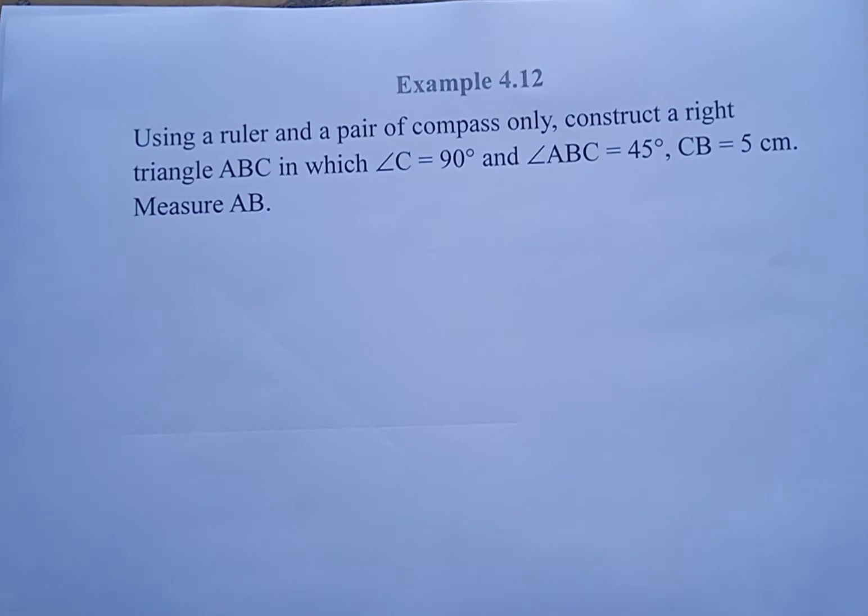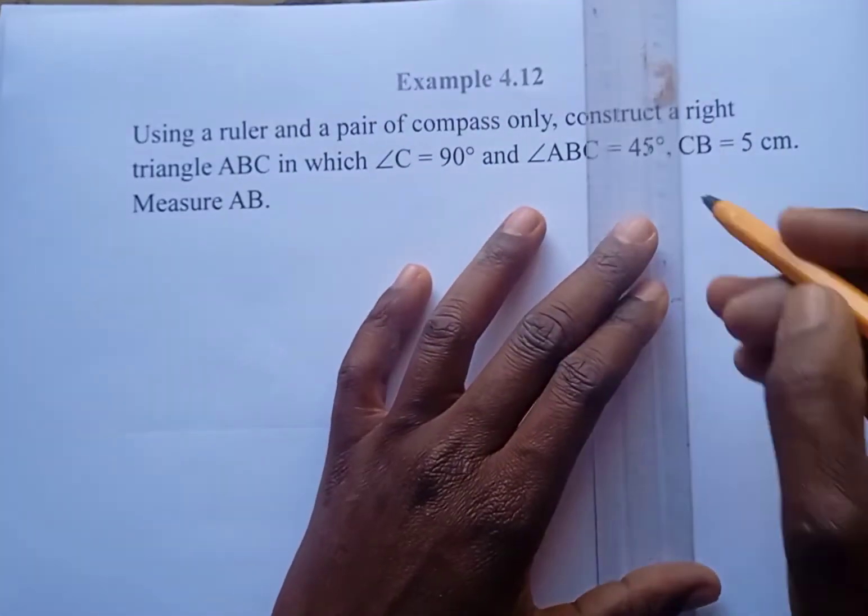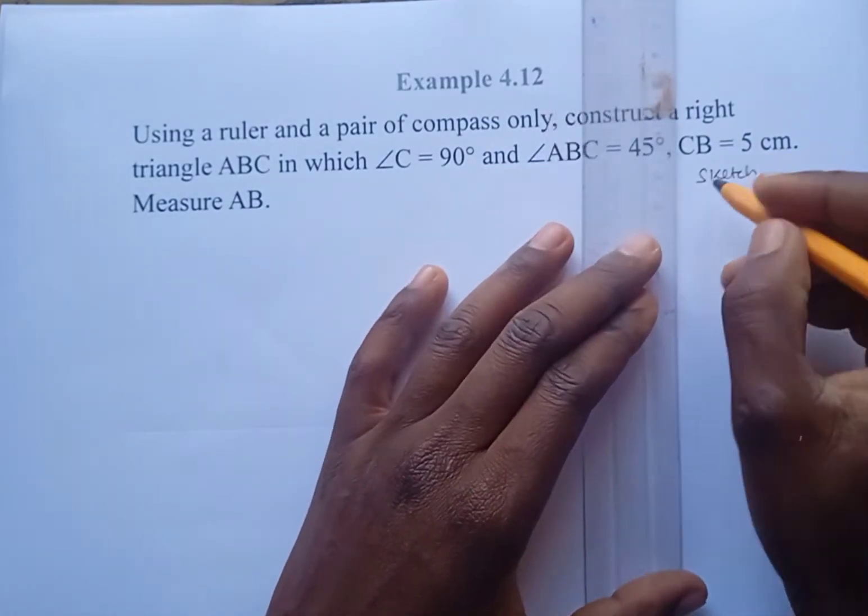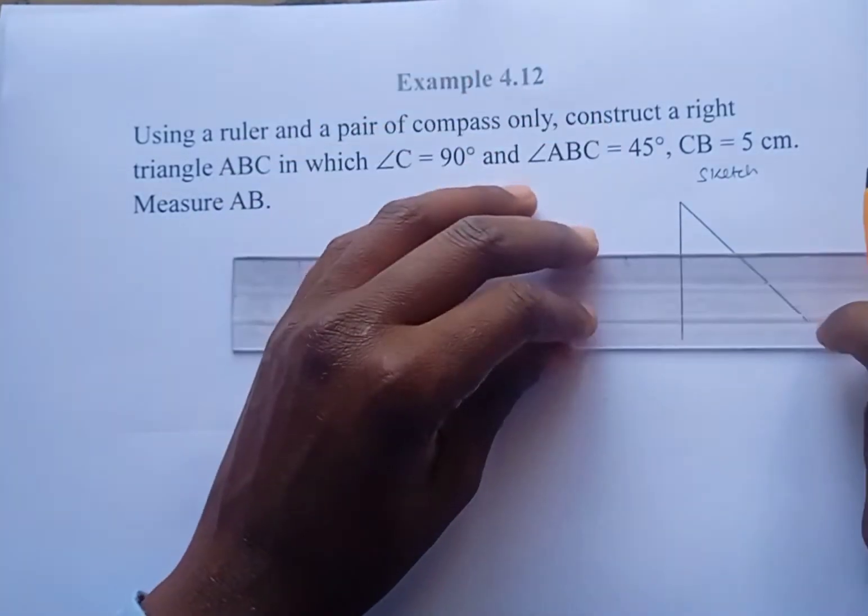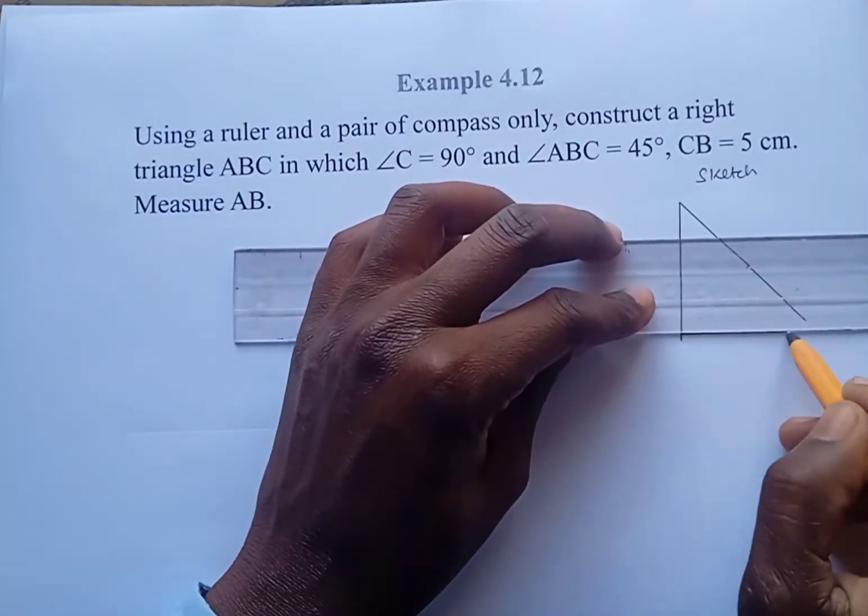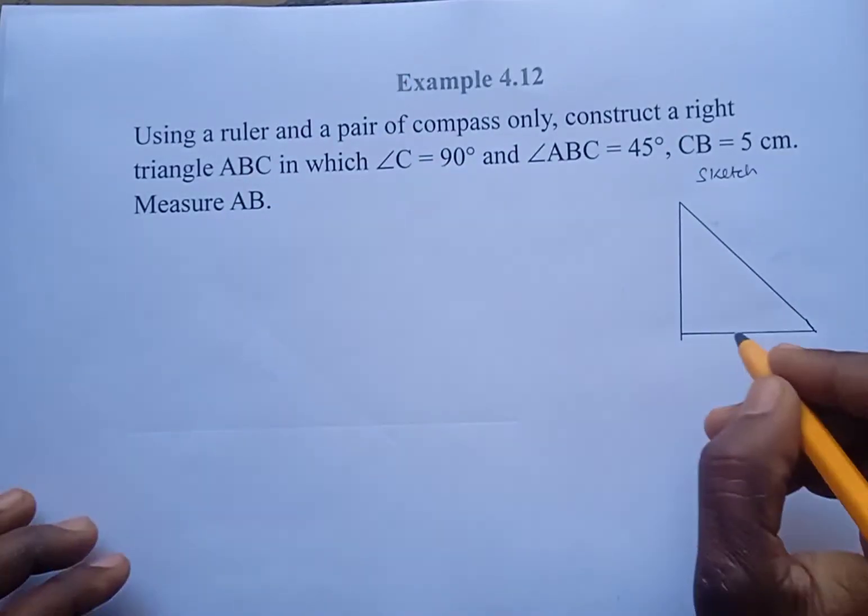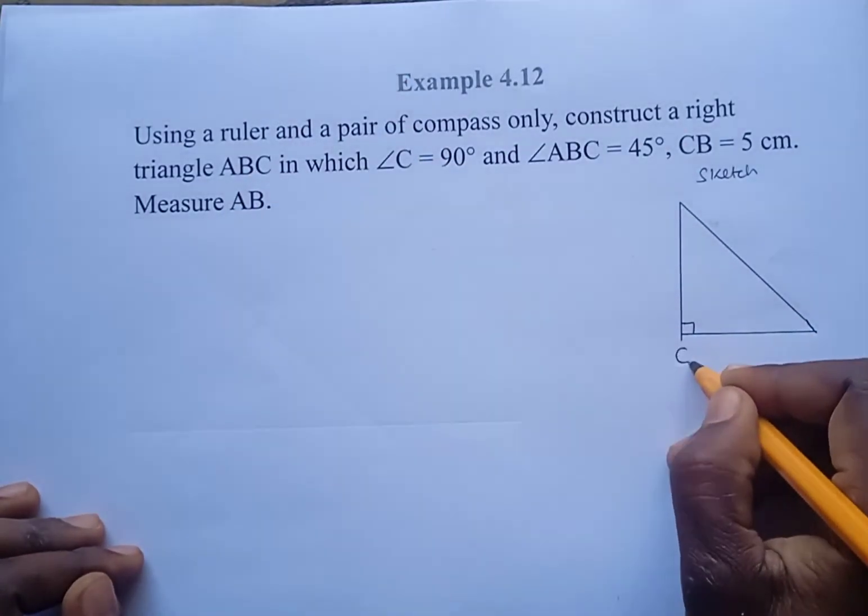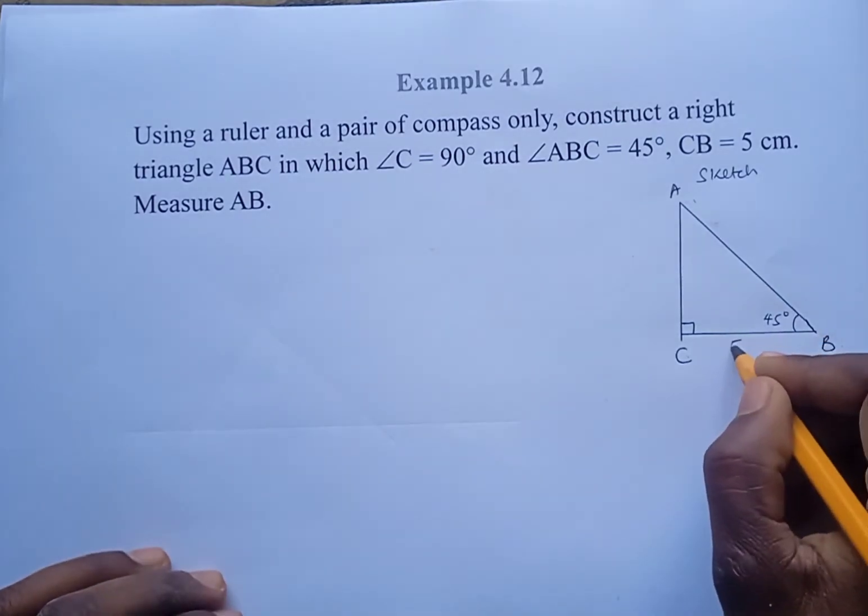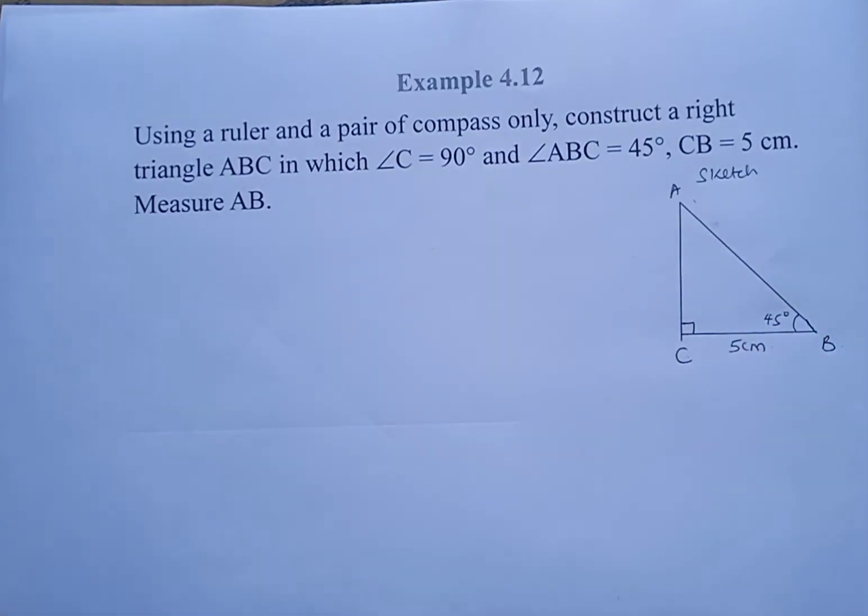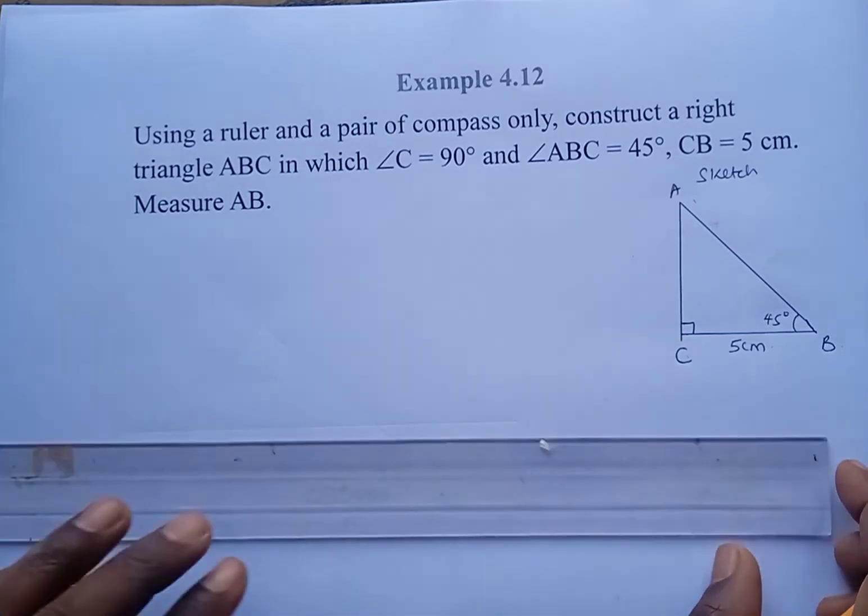So we start with a sketch. A sketch gives us a rough idea of how the triangle will look like. So this is the sketch and we have a right angle at C, therefore this point is C. Then at B we have 45 degrees, and CB is 5 centimeters. So now after the sketch we move to the real drawing.